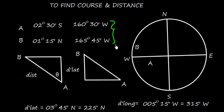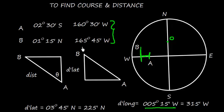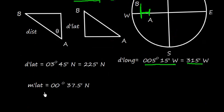Similarly, let's find D-long, the difference in longitude between A and B. Longitudes are measured east or west from 0 degrees longitude. A was at 160 degrees and B is at 165 degrees, so the difference in longitude is 5 degrees 15 minutes west. The direction of D-long is towards the direction of travel, which gives us 315 minutes west.